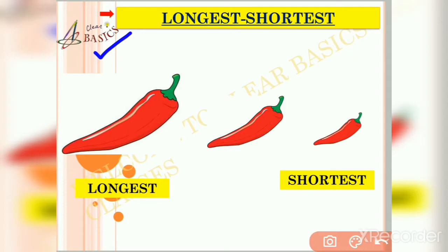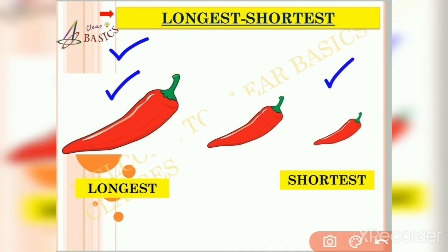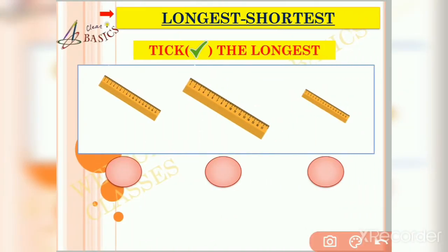Here in this picture we can see three red chilies. Friends, can you identify which chili is the longest and which one is the shortest? Yes, you are correct — the chili at the leftmost end is the longest, while the rightmost one is the shortest, as highlighted in this slide. I hope this is clear to you.